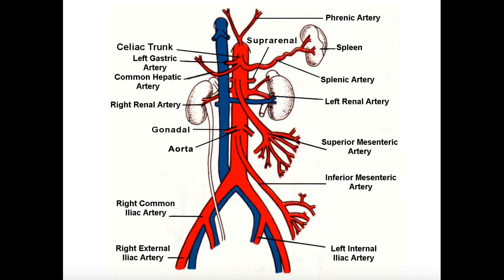Quick recap: starting at the celiac trunk at the top, we go down to the superior mesenteric artery, then the renal arteries, then the gonadal arteries, and then the inferior mesenteric artery. Those five arteries are big to know. In most classes, if you get tested on the abdominal aorta, it's probably going to be one of those — a good bet, probably 60-70% chance.